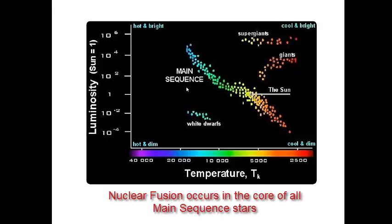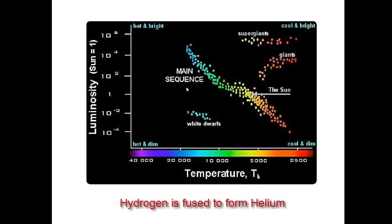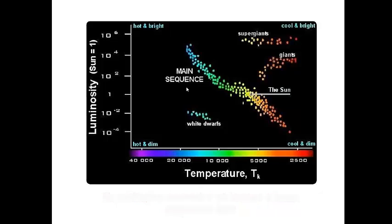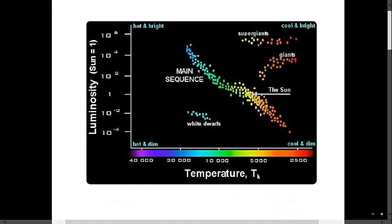Nuclear fusion occurs in the core of all main sequence stars. In nuclear fusion, hydrogen is fused to form helium. How long a star stays on the main sequence depends on its temperature. Hotter stars will burn their hydrogen faster than cooler stars. Once a star burns all of its hydrogen, it is no longer considered a main sequence star and moves to a different section of the HR diagram. We will discuss this more in the next lesson for the week about stellar evolution.